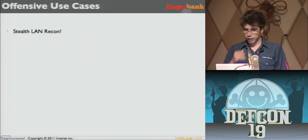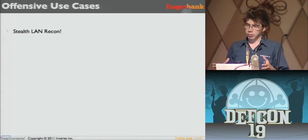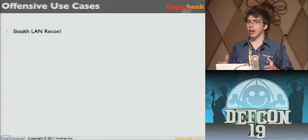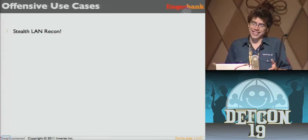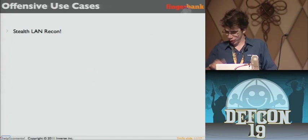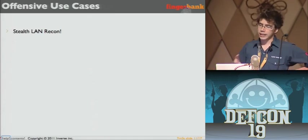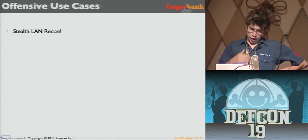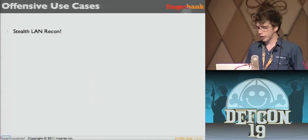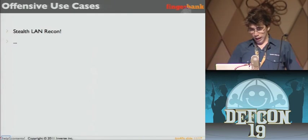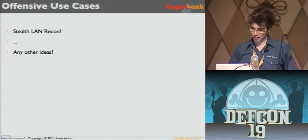Offensive use cases: obviously stealth LAN recon — you sit there, hook a device, sniff the traffic, and see what's there. It's even better when Windows 98 pops up saying it wants an IP address; then you just have to own it with Metasploit and boom, it's done. The clients come to you instead of you having to nmap the network. Afterwards I was trying to find other offensive use cases and I failed at that — someone will have to come up in Q&A and tell me.